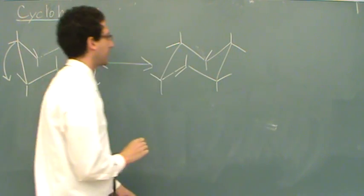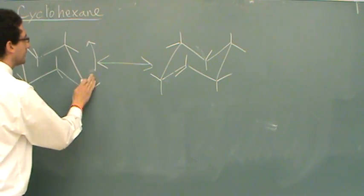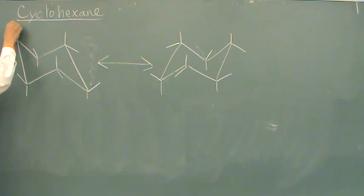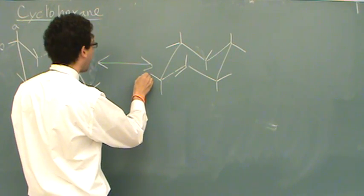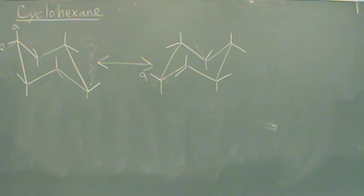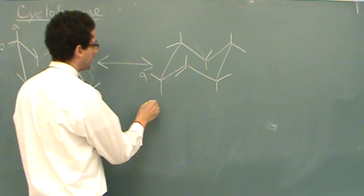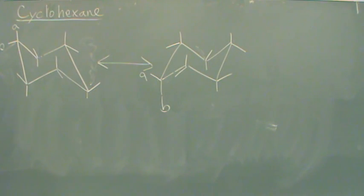And there we go. If there was something — say that's A and this is B — you've got to draw it over there. Now A, which was in the axial position during the ring flip, will always go to the equatorial position. And B, which was in the equatorial, will now flip to axial.